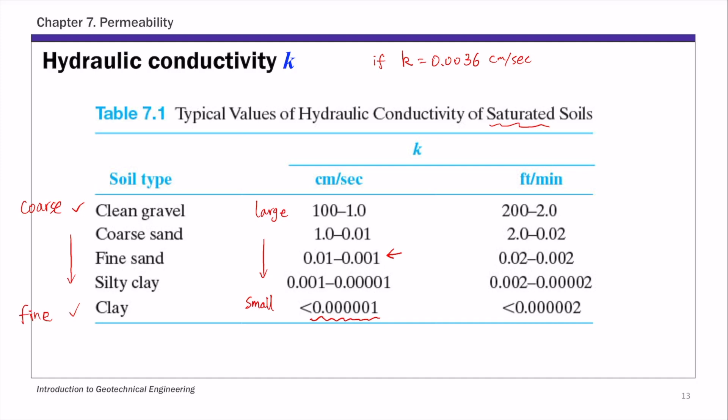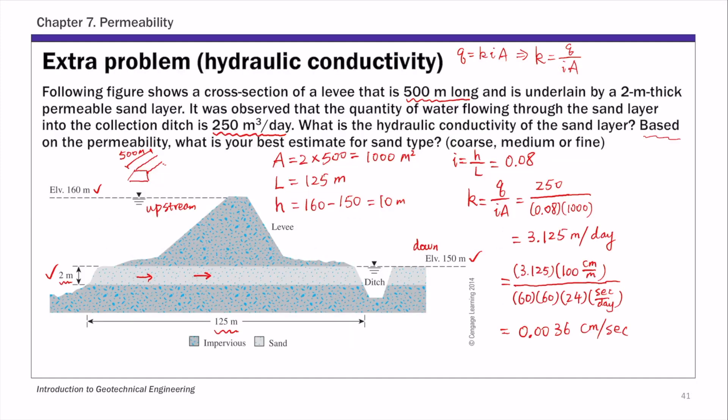Based on this table, our best estimate of soil type—based on Table 7.1—we know that k of 0.0036 centimeters per second is most likely fine sand.